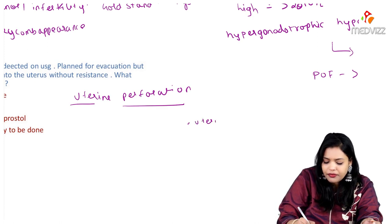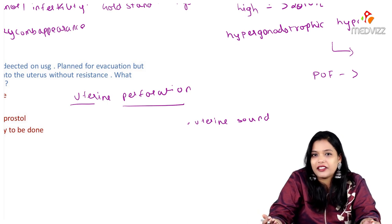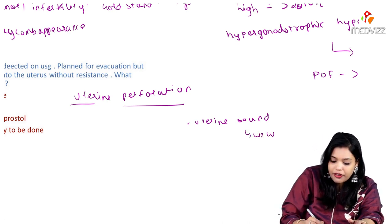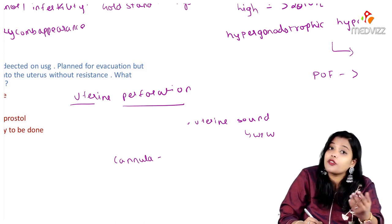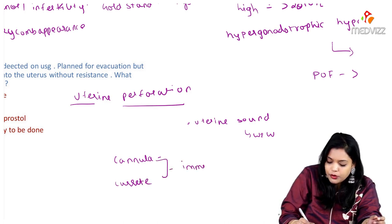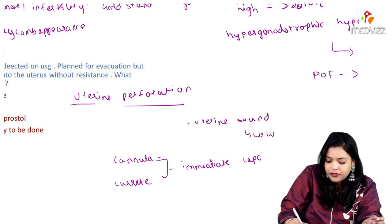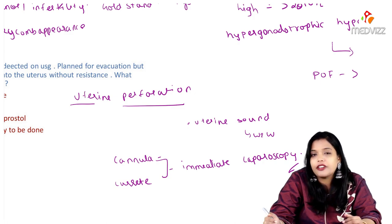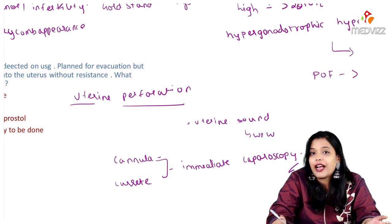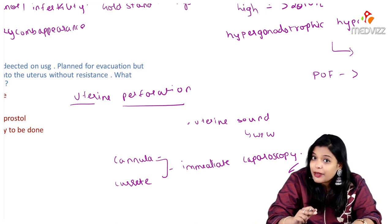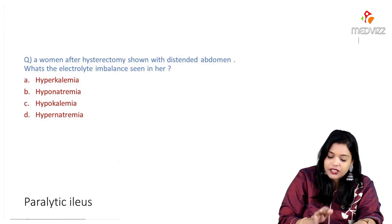In a non-pregnant patient, uterine perforation due to uterine sound — which measures utero-cervical length — you can wait and watch. But when there is perforation of the pregnant uterus with a cannula, or perforation of the non-pregnant uterus with a uterine curette, go for immediate laparoscopy or laparotomy depending on the case. Perforation with uterine sound: wait and watch; perforation with cannula or curette: immediate laparoscopy.